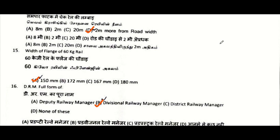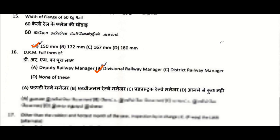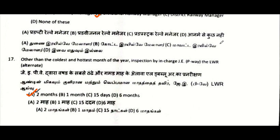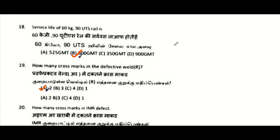Length of check rail in the level crossing: two meters more than the road width. Width of flange of 60 kg rail: 150 mm. Full form of DRM: Divisional Railway Manager. Inspection by in-charge JE P-way for LWR, other than the coldest and hottest month of the year, on alternate basis: two months.